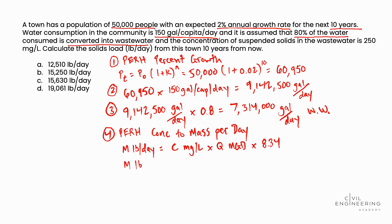Plugging in our variables, we have mass in pounds per day equals C, the concentration of suspended solids in the wastewater of 250 milligrams per liter. Those units line up with our equation. Times Q, the flow rate of wastewater which we calculated in step 3, but we need to make sure that we're using the MGD form of this number. So that's 7.314 MGD times 8.34. So performing this calculation, we determined that the mass in pounds per day is equal to 15,249.69 pounds per day.